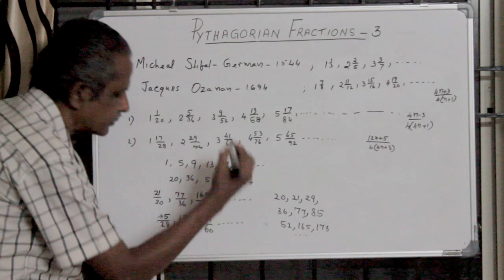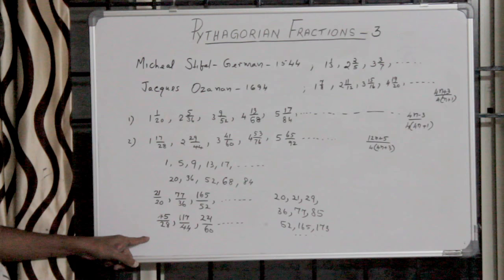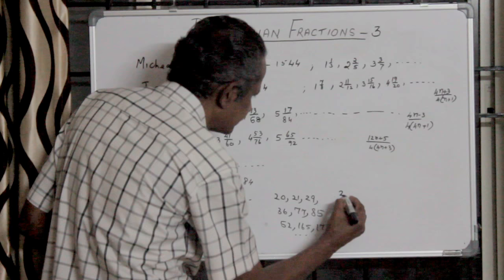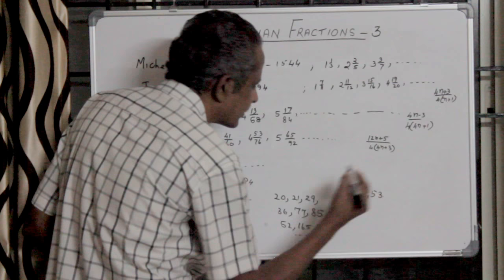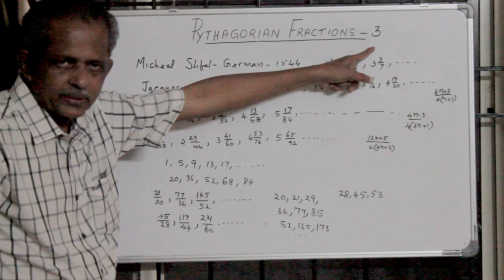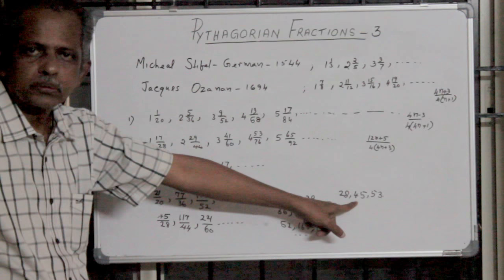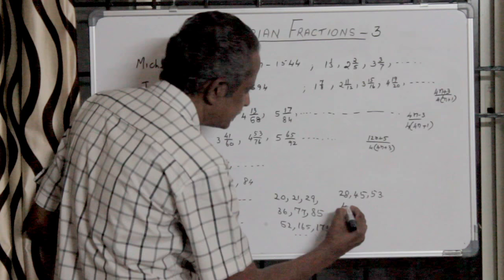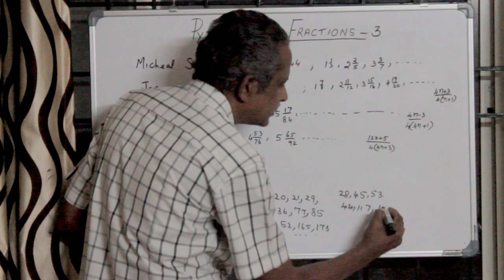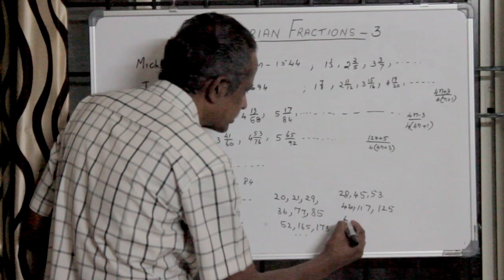From this also, you can write the hypotenuse length by adding 8. That is 28, 45, 53. The least improper fractions of the third series have a difference with the highest part of this triple of 8. Next one is 44, 117, plus 8, 125. Third one: 60, 221, 229.